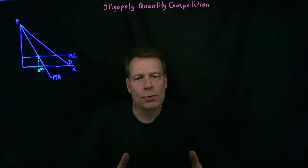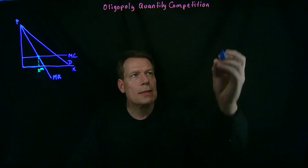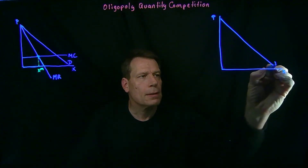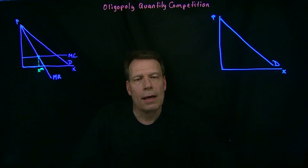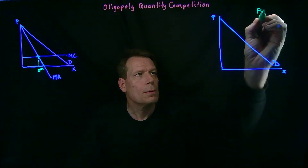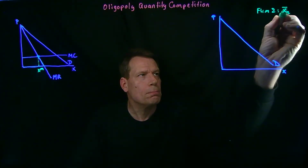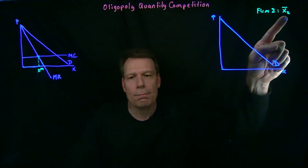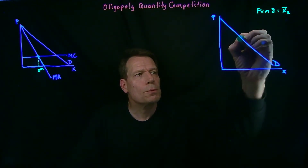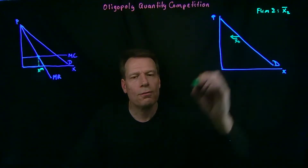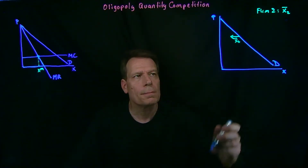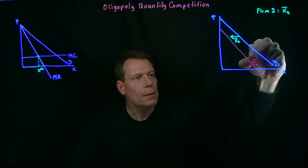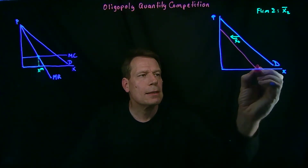So how would a firm think about how much it should produce in an oligopoly of this kind? Firm one knows what the market demand curve is. Now suppose that firm one thinks that firm two is going to produce a quantity x2_bar. It knows that the market demand isn't its demand curve anymore because firm two is taking part of that market demand. So it has to subtract what firm two is producing from the market demand to find out how much demand is left over for itself — for firm one. Once we subtract this quantity that firm two is producing, we'll get a new demand curve. We sometimes call that a residual demand curve — it's the demand that's left over for firm one.